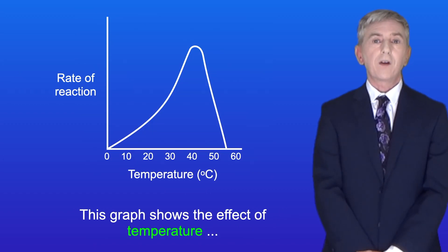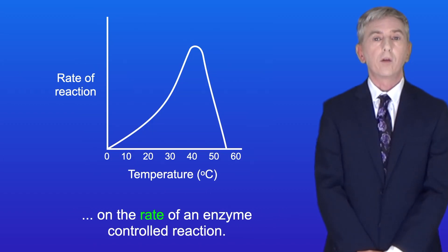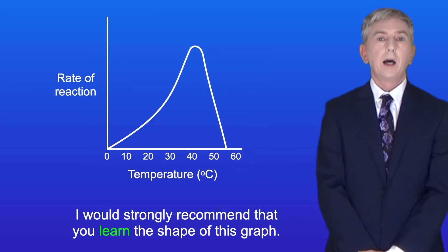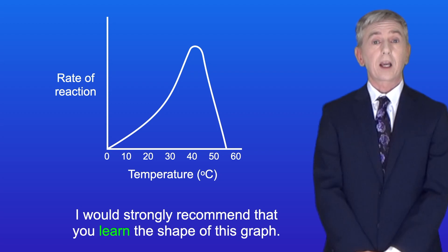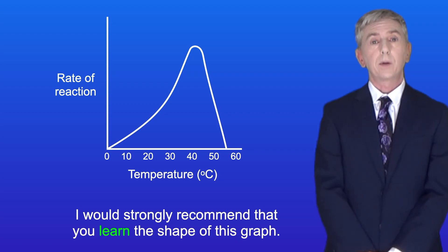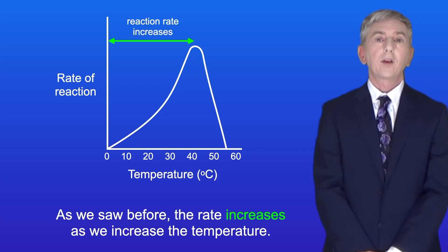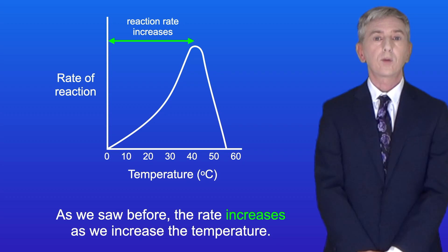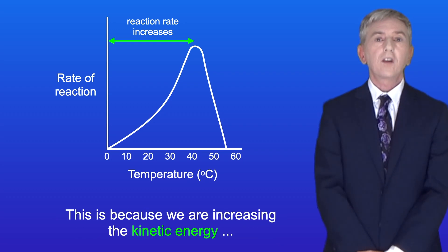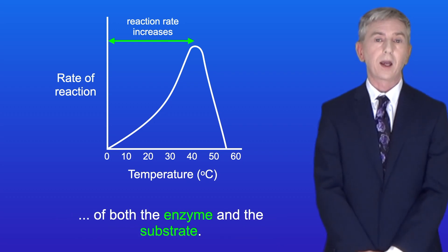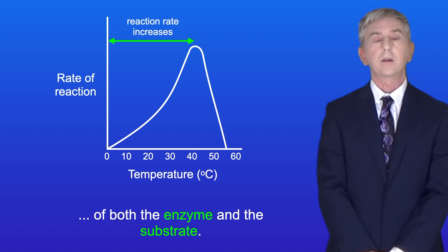This graph shows the effect of temperature on the rate of an enzyme controlled reaction, and I'd strongly recommend that you learn the shape of this graph. As we saw before, the rate increases as we increase the temperature. This is because we're increasing the kinetic energy of both the enzyme and the substrate.